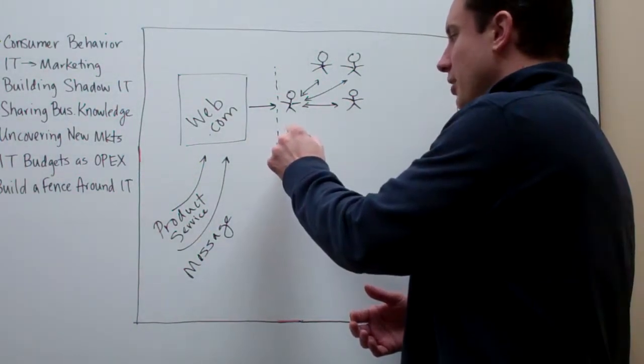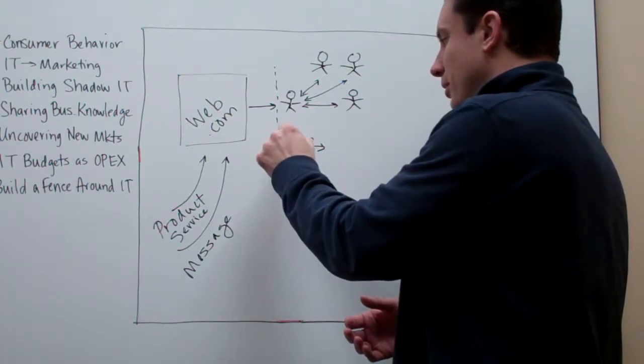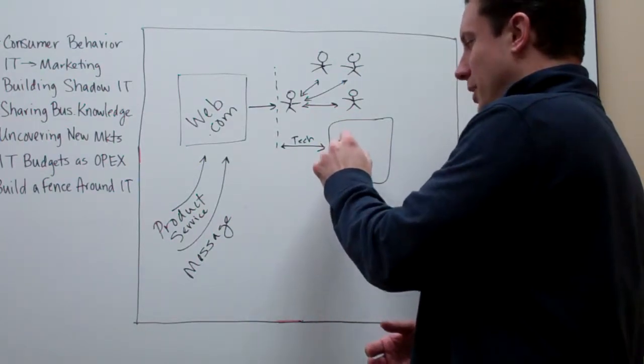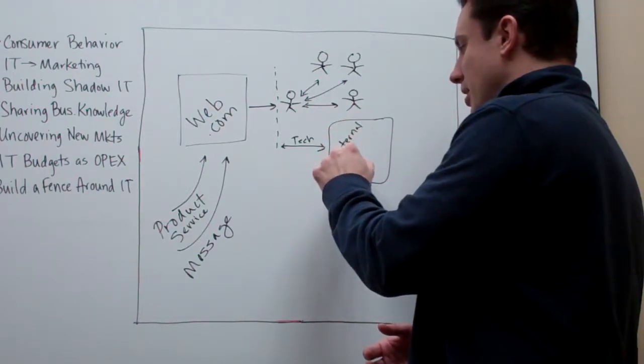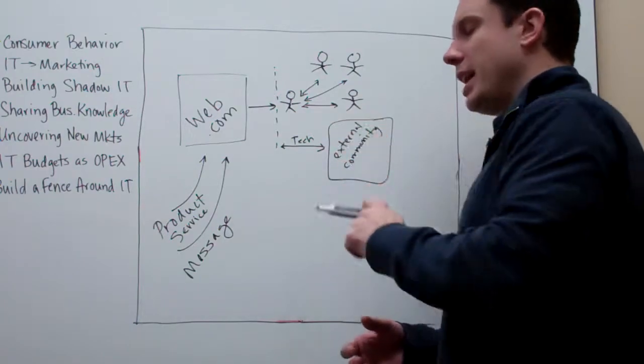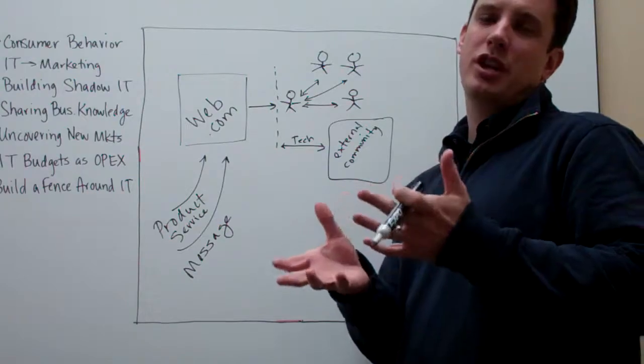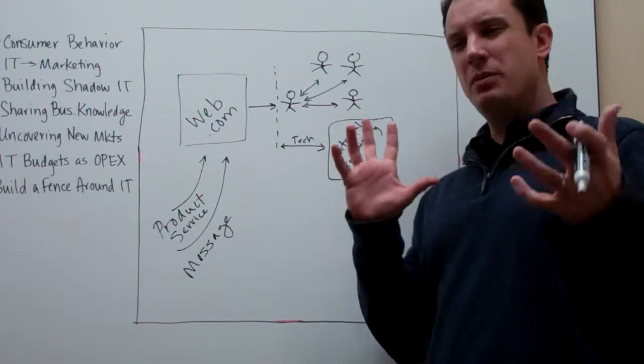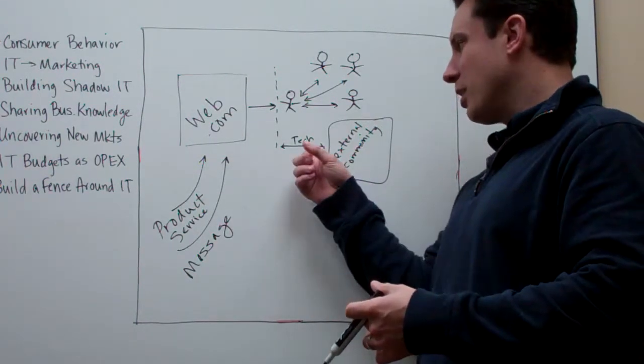First and foremost, it means you're going to need help from a technology perspective being able to not only participate in these communities - I'll call them external communities - where information about you is being communicated, but you also need a technology way to get that information back. You want to learn about what your customers are talking about. You want to learn about it in real time. You'd like to maybe be able to do some analysis of what they're talking about.